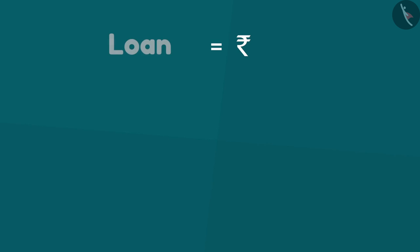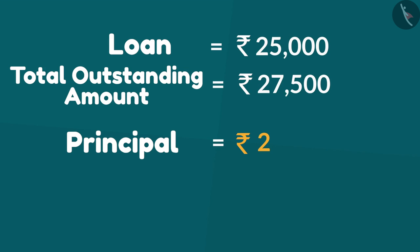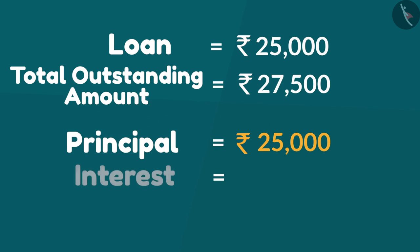What does that mean uncle? Look, your dad has taken 25,000 rupees as loan and he has to repay 27,500 rupees to the bank. Out of 27,500, the principal is 25,000 which is the amount taken as loan. Then what is the interest? You can pause the video here if you want and think about it.